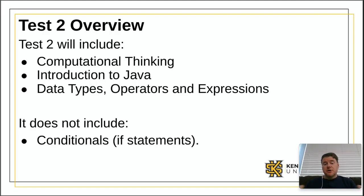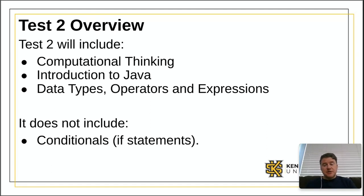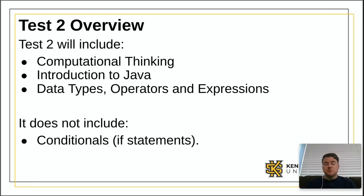First off, we're going to talk about what the test does include and what it doesn't include. The sections on this test are computational thinking, introduction to Java, data types, operands, and expressions. Those are the three sections. We are not including conditionals, which we have already covered in lecture, but they'll be on the next test. Those are the names of the modules in D2L. If you go into your D2L shell and look under content, you'll see the names of those modules, where the PowerPoint presentations and video lectures are, if you need to go back and review something.